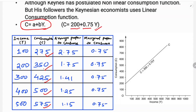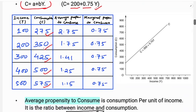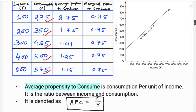Now we look at the average propensity to consume. Average propensity to consume means the consumption per unit of income — it is the ratio between consumption and income.